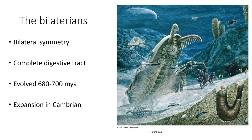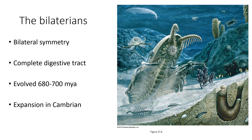A body plan highly successful during the Cambrian was the bilateral body plan — bilateral symmetry, having a left side and a right side, a front and a back, with a complete digestive tract with a mouth and anus separated by a long tube. This form evolved around 680 to 700 million years ago and expanded greatly during the Cambrian. Here we can see some of these bilateral organisms living side by side with sponges, and the bilaterians would diversify further later on.